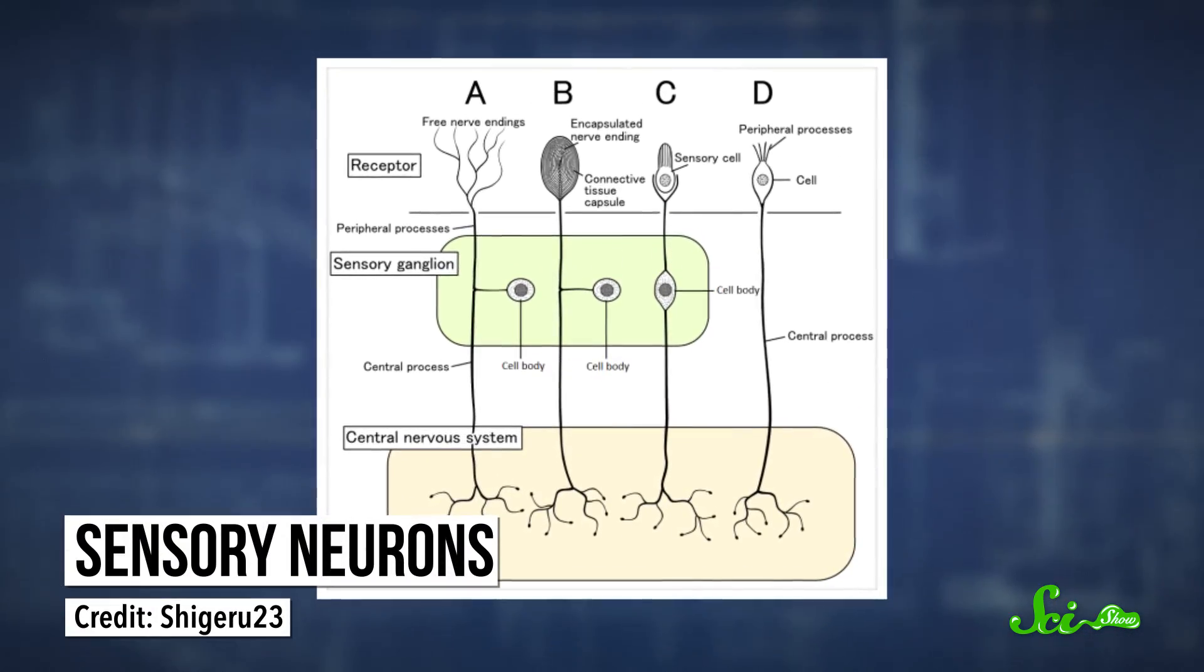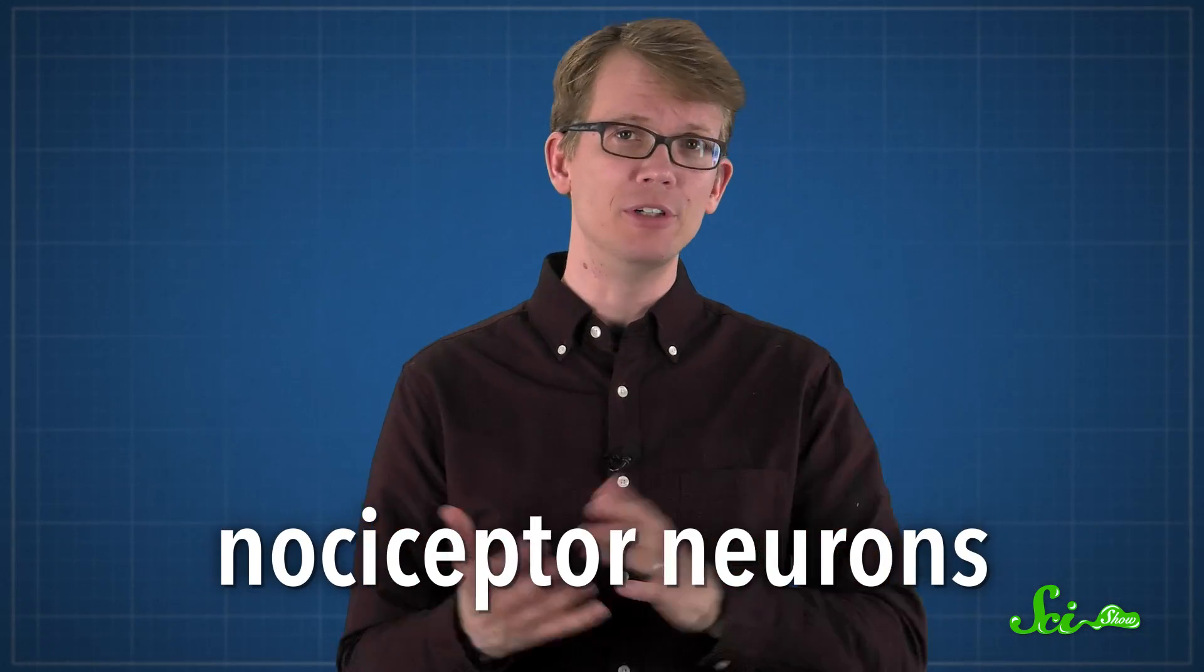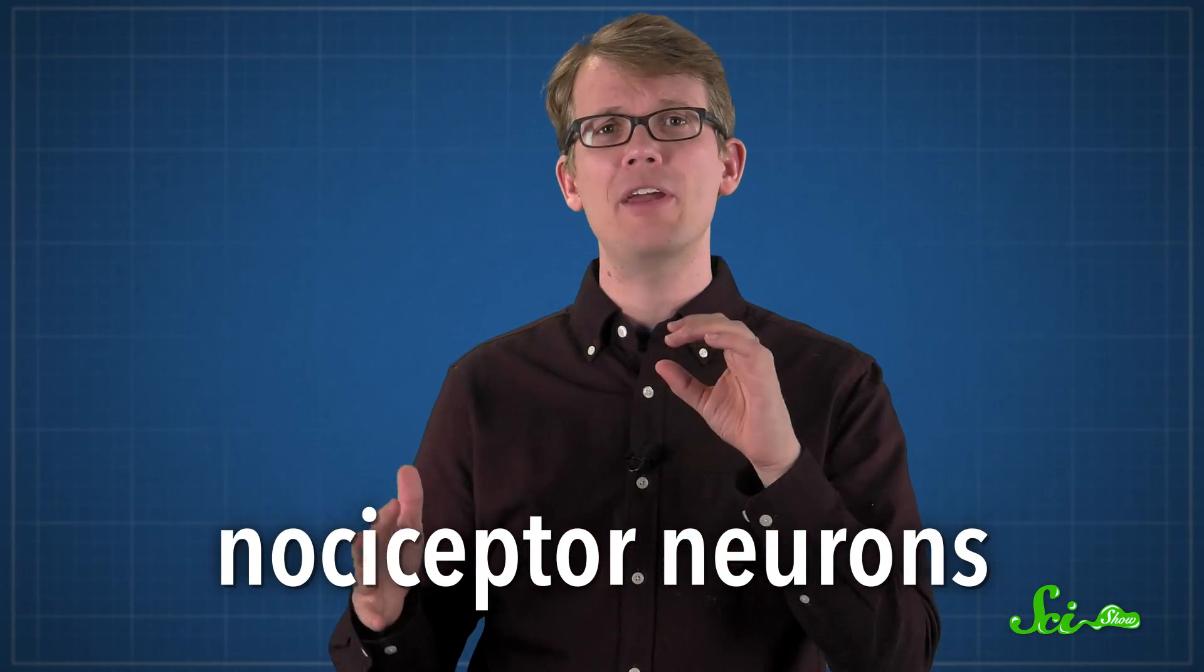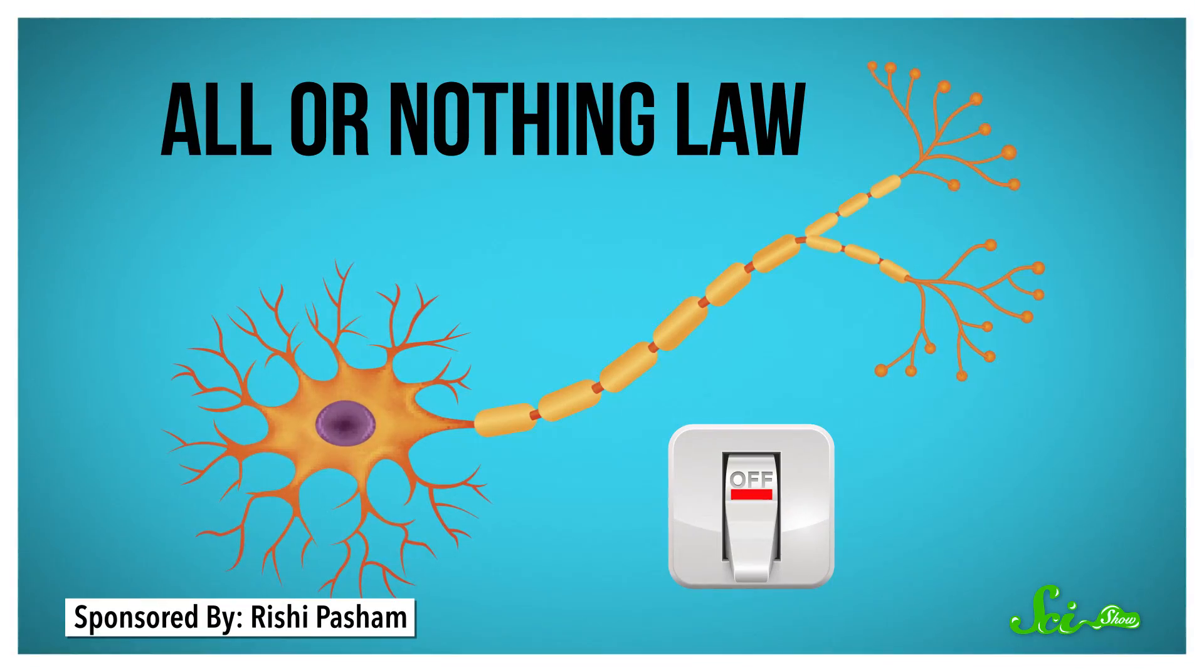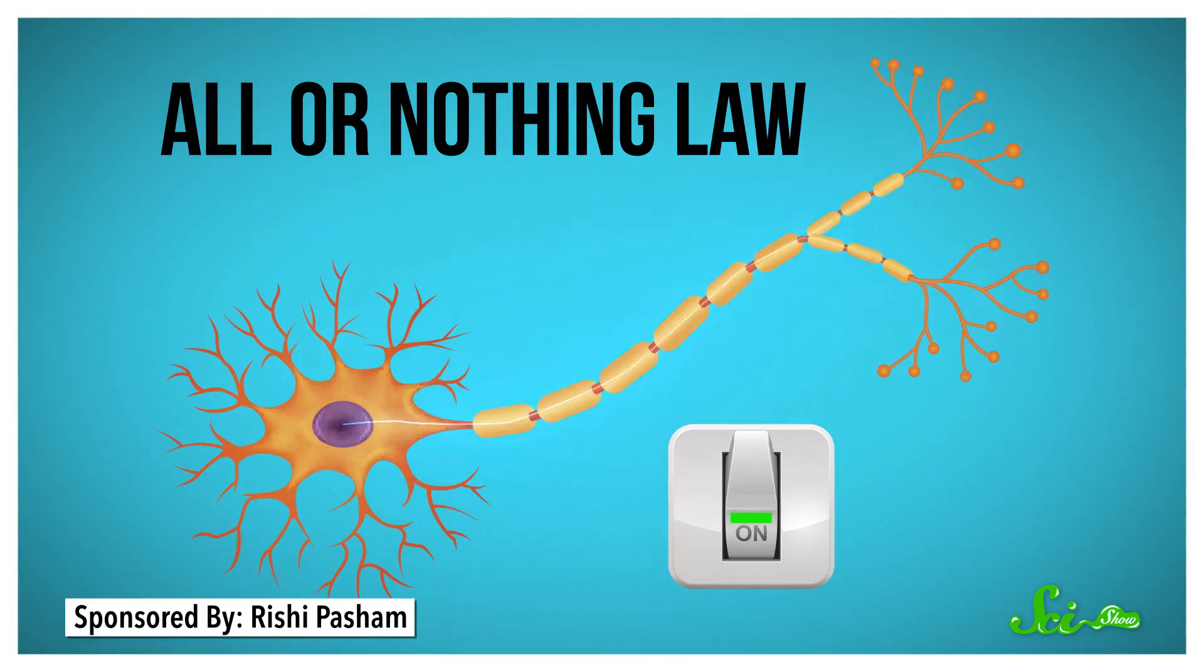The first problem is the nerves thing. You feel pain in the same way you sense other things, through your sensory neurons. And your groin is packed with them. There are different types of sensory neurons with different receptors. The ones that sense pain are called nociceptor neurons. And like all neurons, they obey what's called the all-or-nothing law. That means that a neuron either sends a signal or it doesn't. There's no in-between.